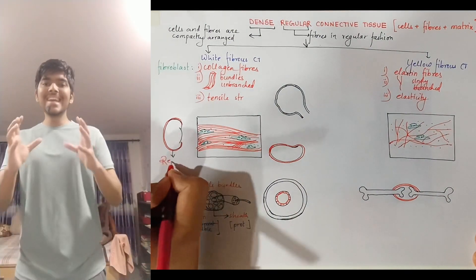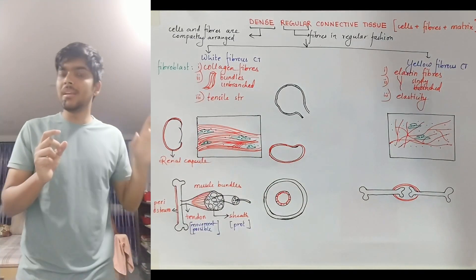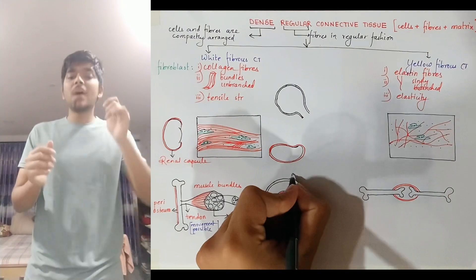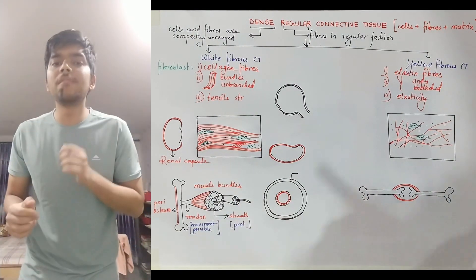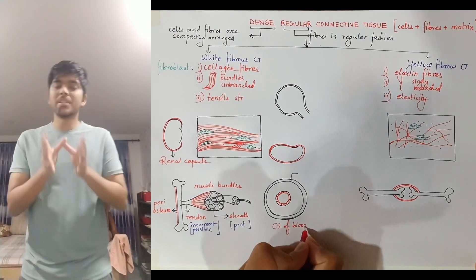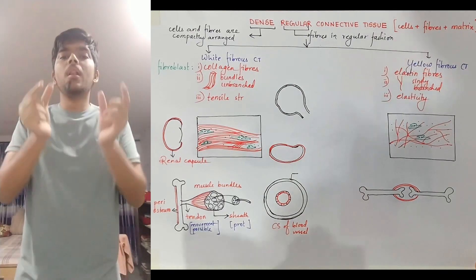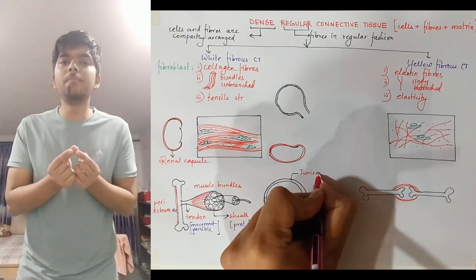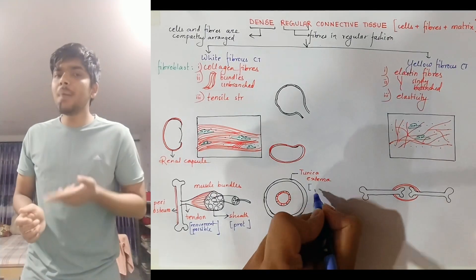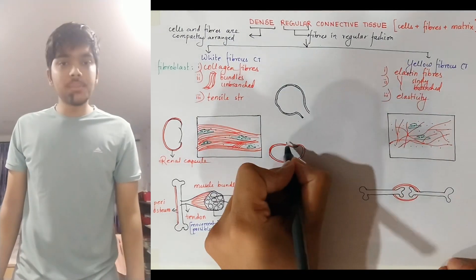Similarly, the kidney is covered by the renal capsule — 'renal' being associated with the kidney and 'capsule' being a covering — and this renal capsule providing protection to the kidney is also made up of white fibrous connective tissue. In veins and arteries, the wall consists of three layers; the outermost layer is known as the tunica externa — 'tunica' meaning layer and 'externa' meaning external — which is also made up of white fibrous connective tissue, providing protection.